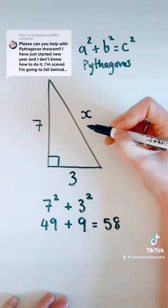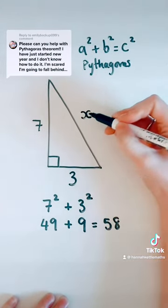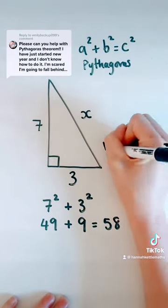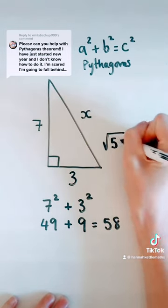That doesn't mean that this side is 58. It means this number times by itself is 58, and the opposite of timesing something by itself is square rooting.